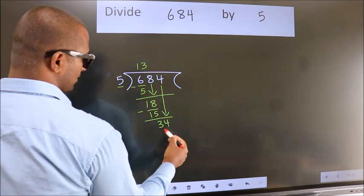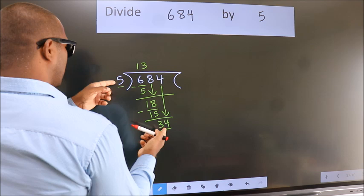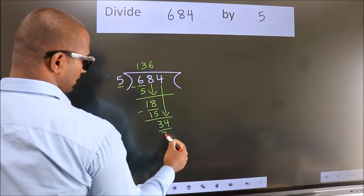So 4 down. So 34. A number close to 34 in 5 table is 5 6 30.